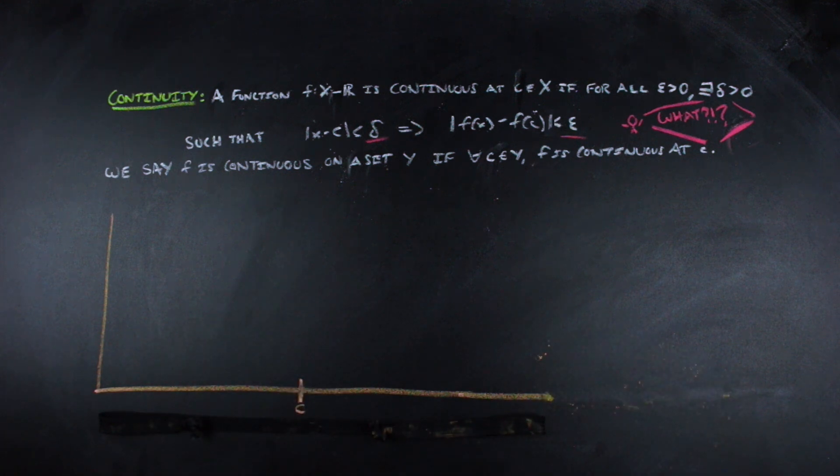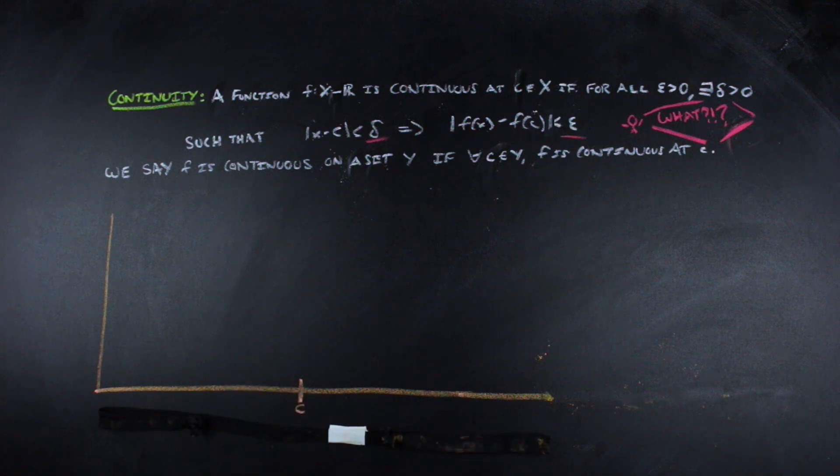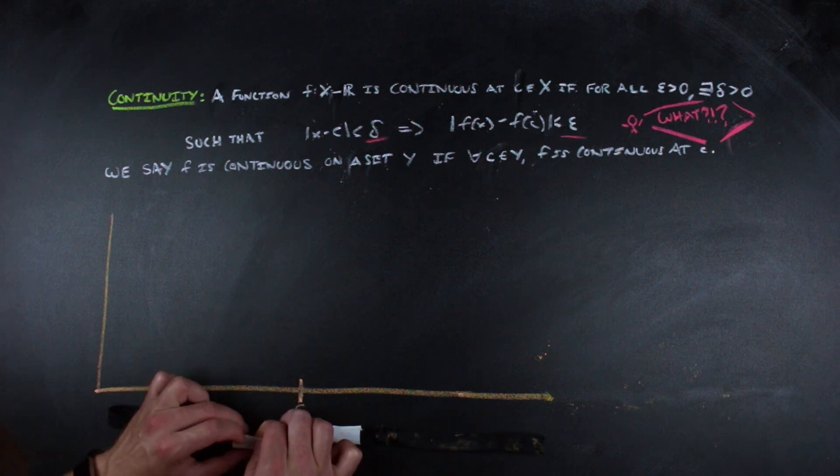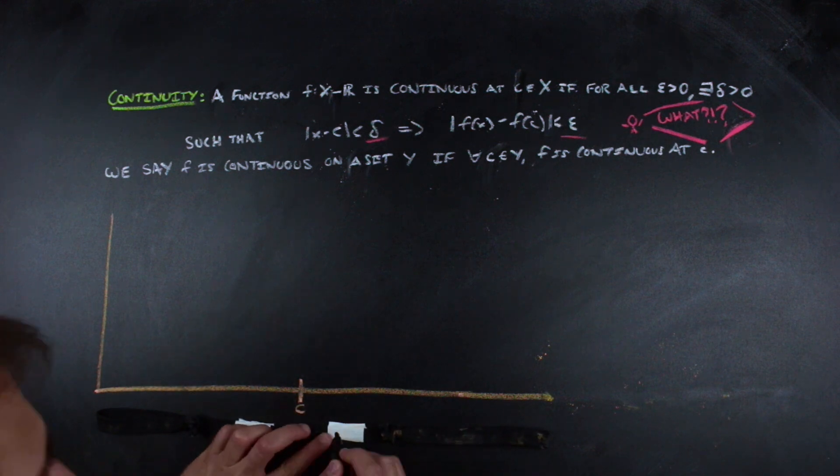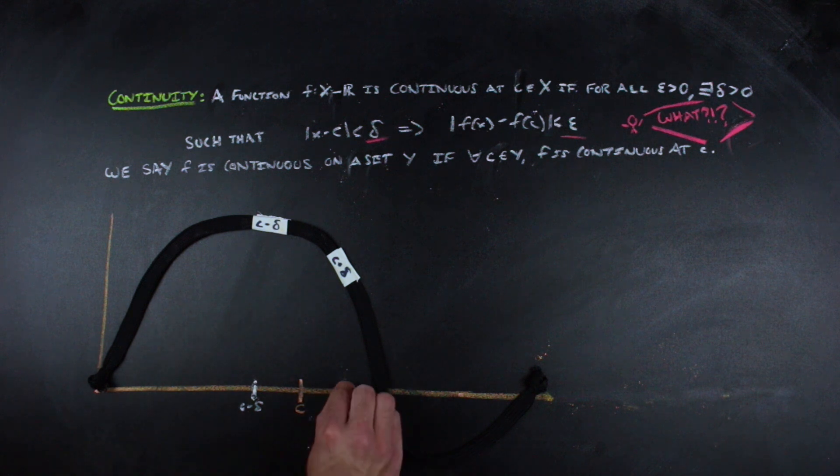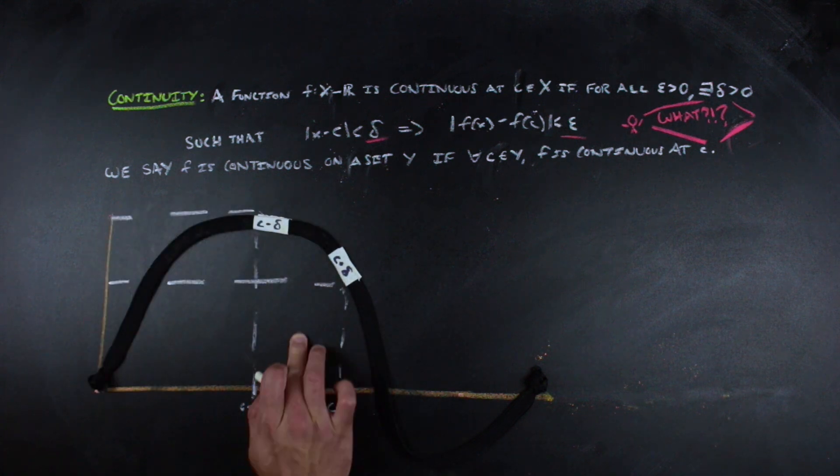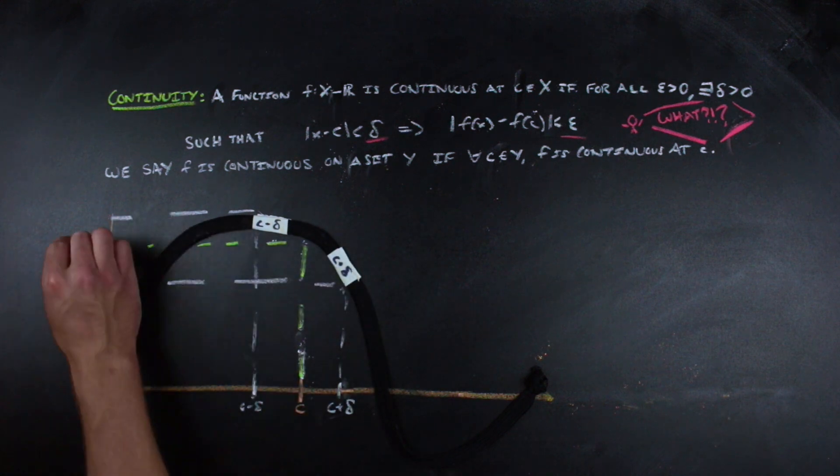We can choose a point to be our c on the shoelace. And next, a choice of delta tells us how far we're willing to go out in both directions from our chosen c. So let's say that delta is 1 and that corresponds to going out to these two pieces of tape on the string. Continuity tells us that when we map this, there is going to be some constant epsilon that corresponds to an extreme in the vertical difference between the image of c and the images of the two endpoints.